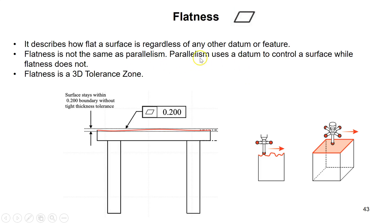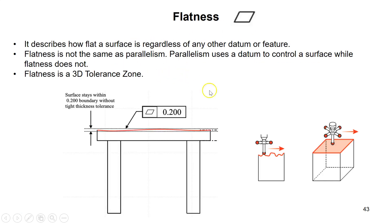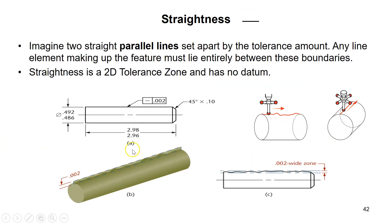Flatness is similar to straightness but is a 3D tolerance zone — it applies to an entire surface, not just an edge. It also has no datum. Two parallel planes containing all surface points must have a gap no more than 200 microns. Flatness is the 3D version of straightness. It is different from parallelism in that parallelism has a datum, while flatness and straightness do not.